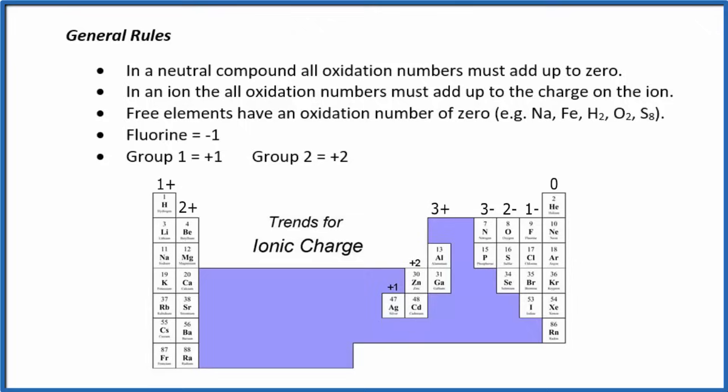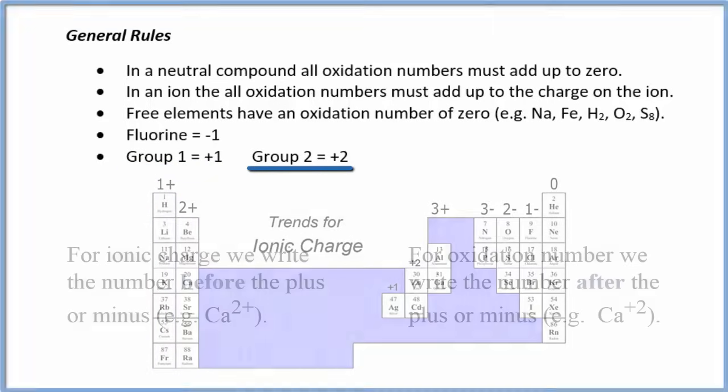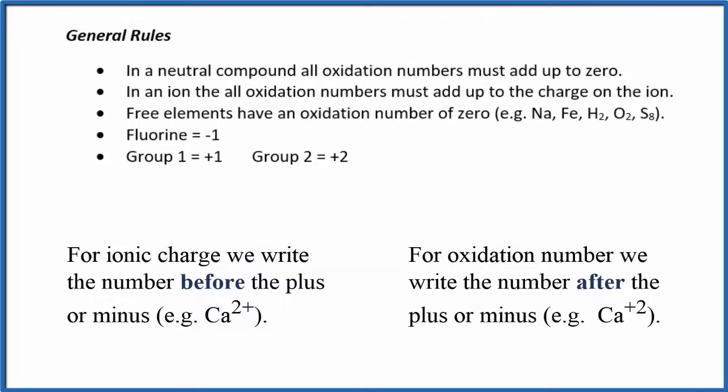In this next rule, oxidation number and ionic charge do overlap. On the periodic table, elements in group 1 have a 1 plus charge. Their oxidation number is plus 1. Group 2 has an oxidation number of plus 2. And aluminum in group 13, sometimes called 3a, is plus 3. So pause and try these.